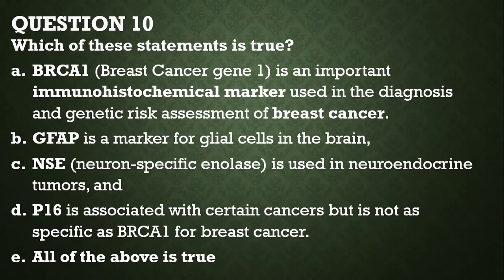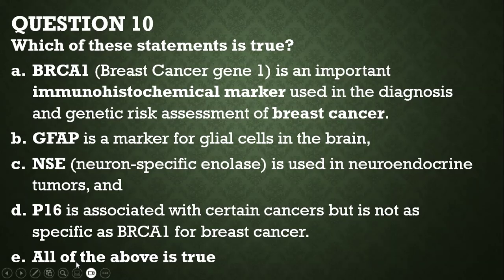Question number ten: which of the statements is true? BRCA1, the breast cancer gene 1, is an important histochemical marker used in the diagnosis and genetic risk assessment of breast cancer — correct. GFAP is a marker for glial cells in the brain — correct. Neuron-specific enolase is used in neuroendocrine tumors — correct. P16 is associated with certain cancers but is not as specific as BRCA1 for breast cancer. All of the sentences are true.